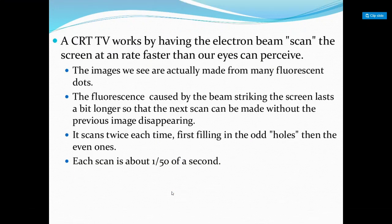The CRT works by having the electron beam scan a screen at a rate faster than our eyes can perceive. The images we see are formed by the striking of electrons, and the next scan is made before the previous image disappears. It scans twice each time — first filling the odd positions, then the even positions. Each scan is about 1/50 of a second.